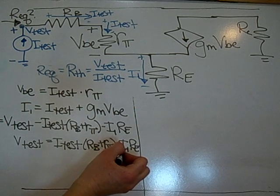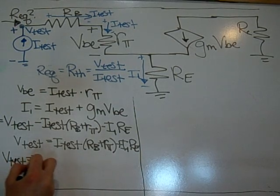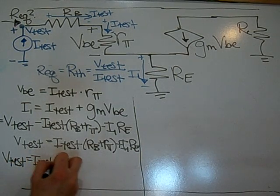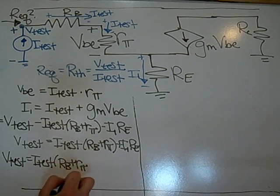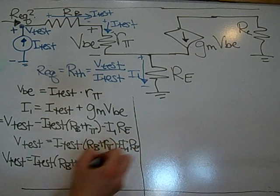So now I can substitute this I-1 with the I-1 up here, and I have V-test is equal to I-test, Rb plus R-pi, plus Re. So I-test times Re.